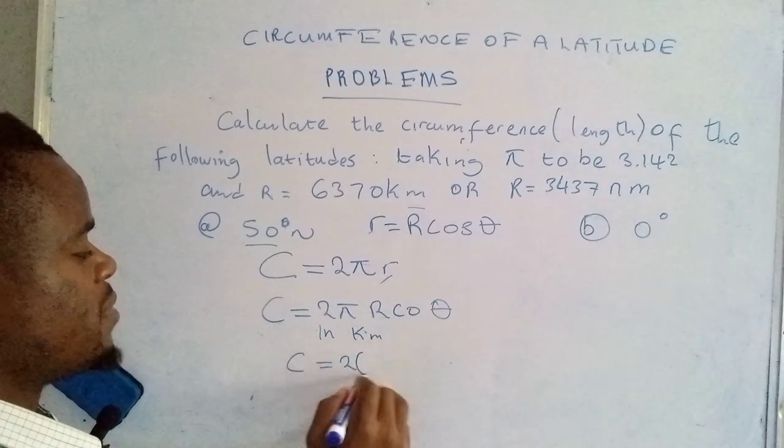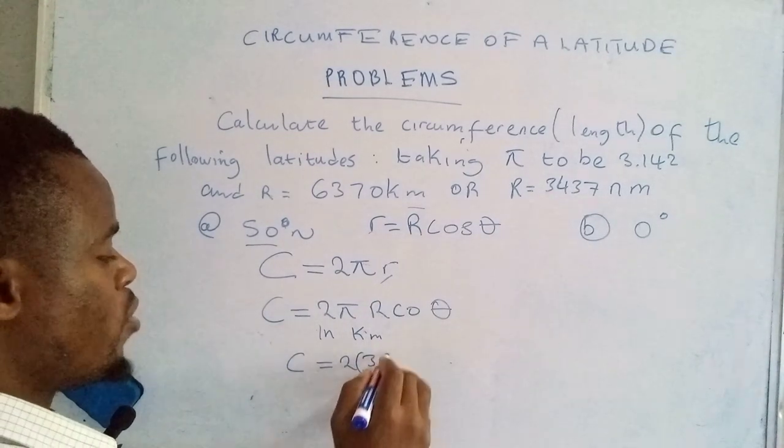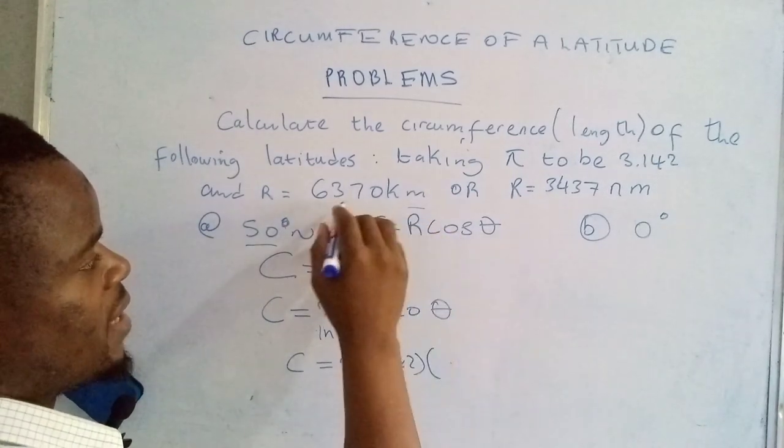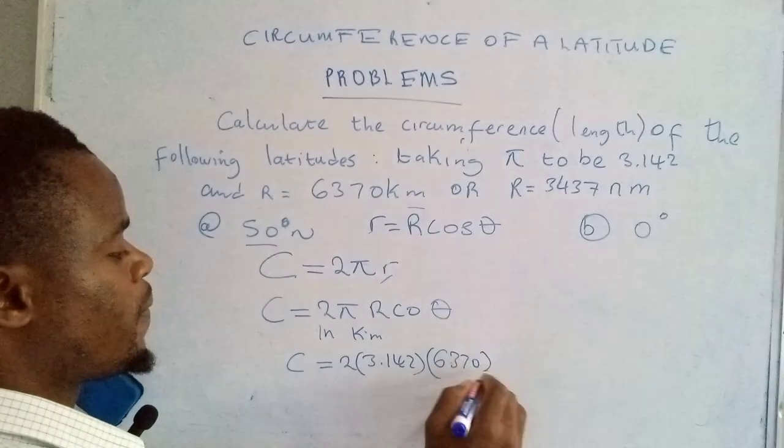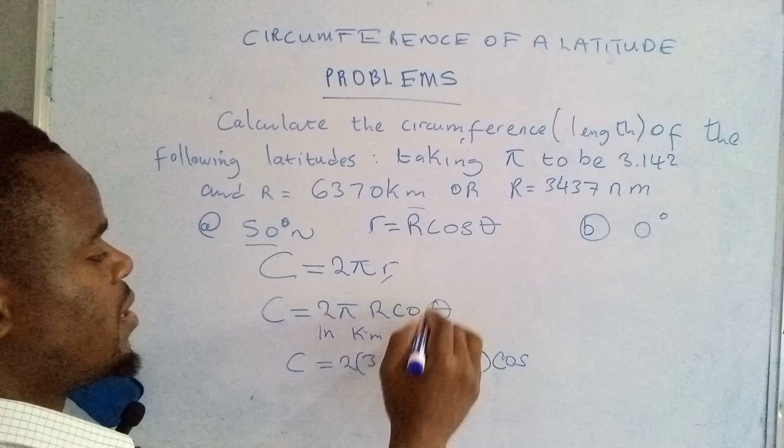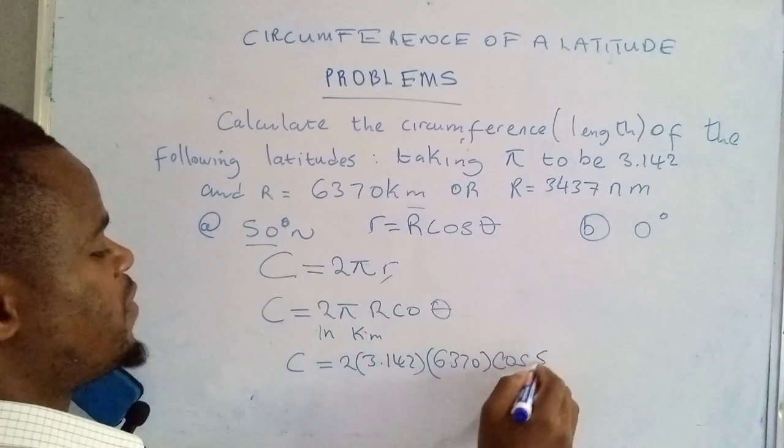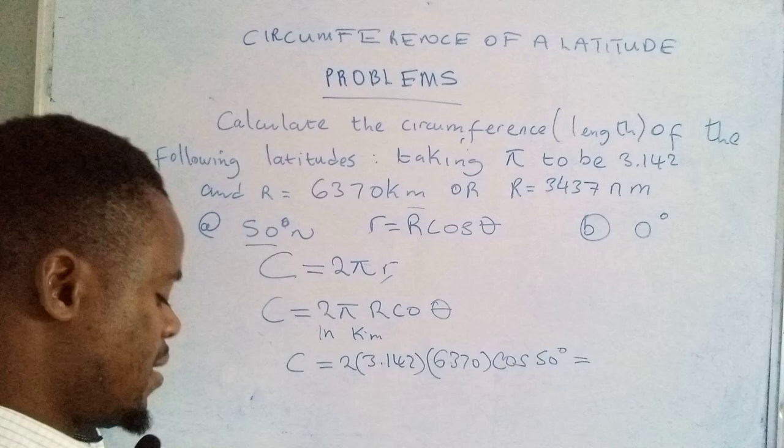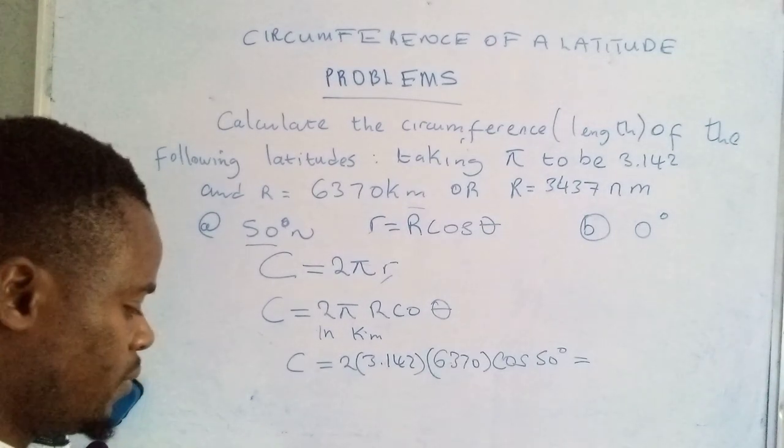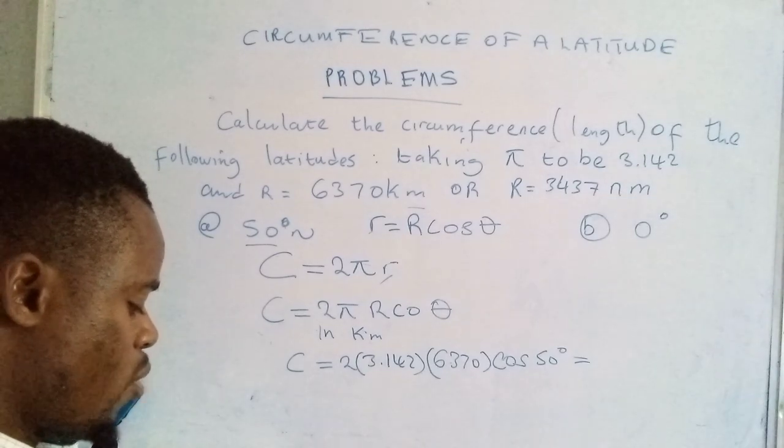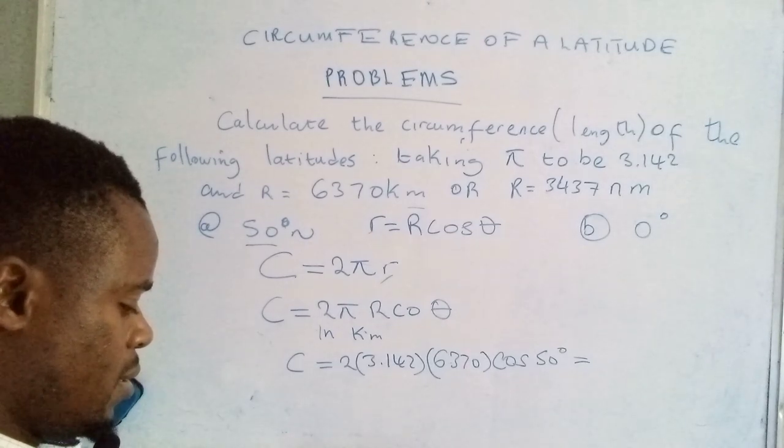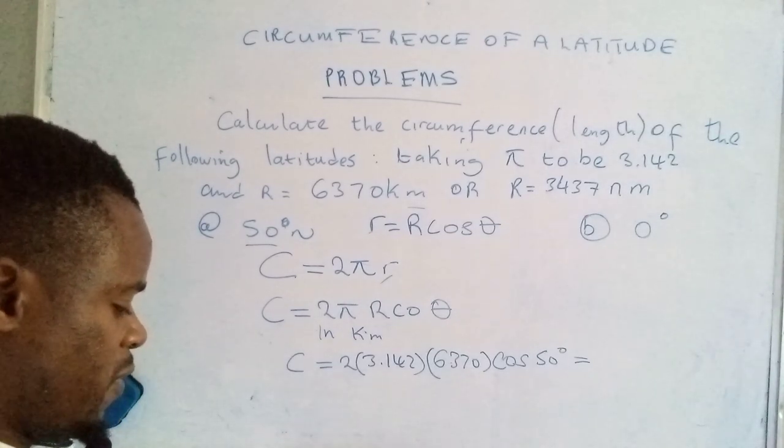In kilometers, the circumference is equal to 2 times π, that is 3.142, then the radius of the earth in kilometers is 6370, and then we punch cos θ is actually 50 degrees. So now let's find the answer. So that would be 2 times 3.142 times 6370, then cos 50.